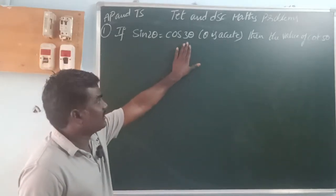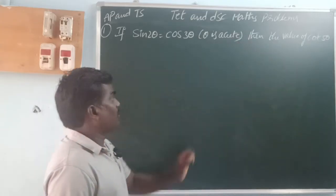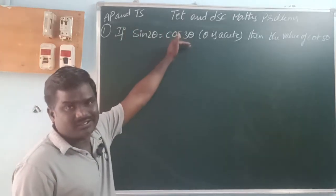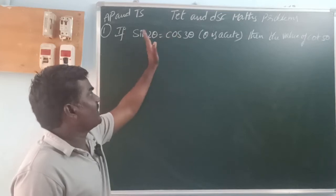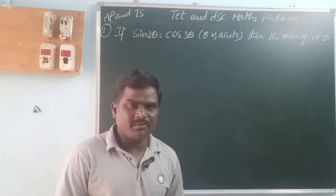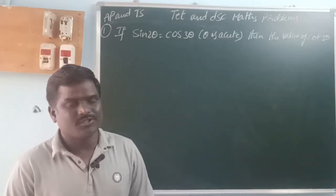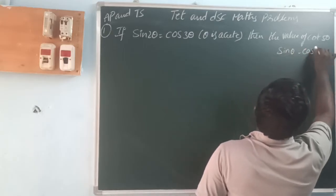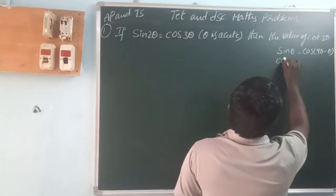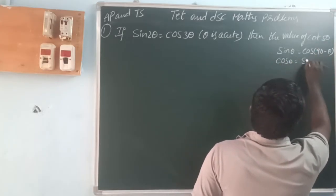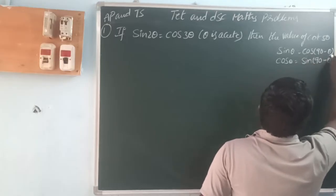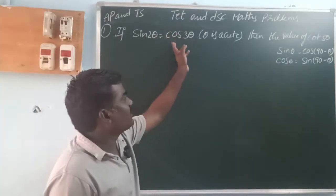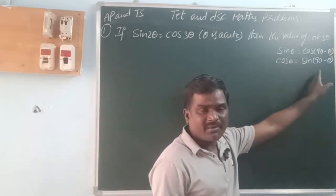So sin 2θ is equal to cos 3θ. Here we can change into the same ratios by using complementary angles. We know that sin θ is equal to cos(90 minus θ), or cos θ can be changed into sin(90 minus θ). Here I will change cos 3θ into a sin ratio version using complementary angles.